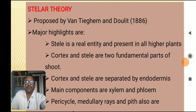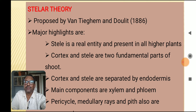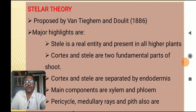The Stele Theory was proposed by Van Tiegham and Douliot in 1886. The major highlights are: stele is a real entity and present in all higher plants. The cortex and stele are two fundamental parts of the shoot, separated by endodermis. Main components are xylem and phloem; other components include pericycle, medullary rays, and pith.